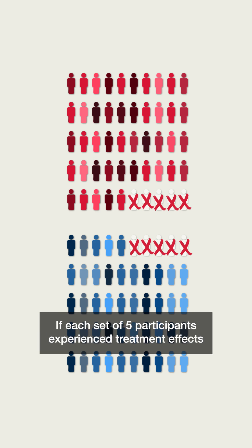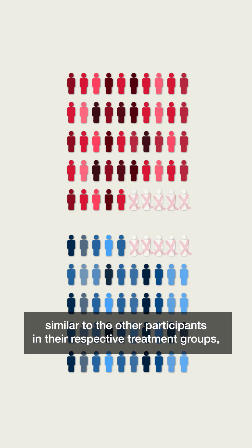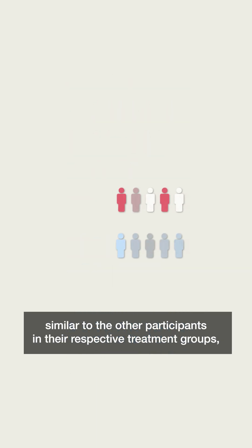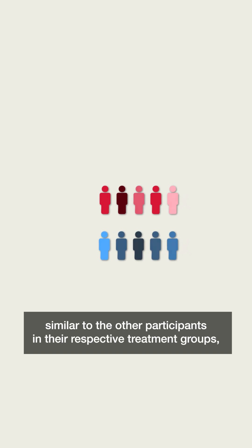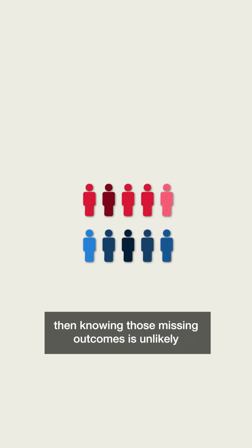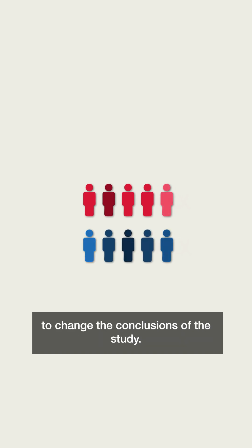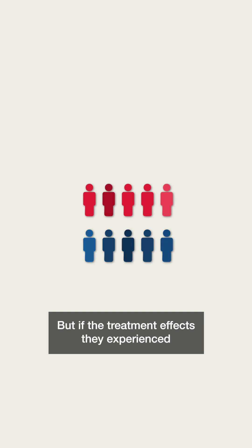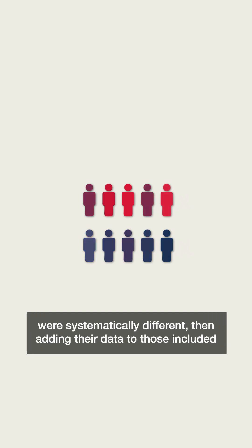If each set of five participants experienced treatment effects similar to the other participants in their respective treatment groups, then knowing those missing outcomes is unlikely to change the conclusions of the study. But if the treatment effects they experienced were systematically different,